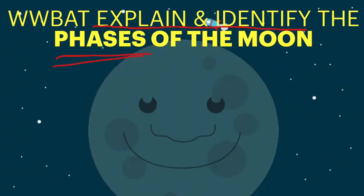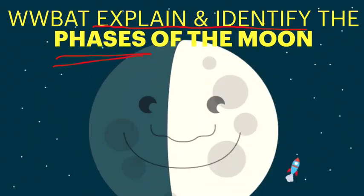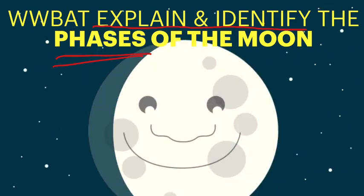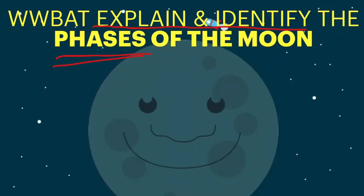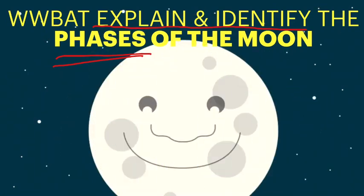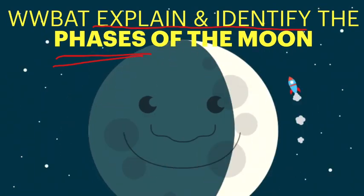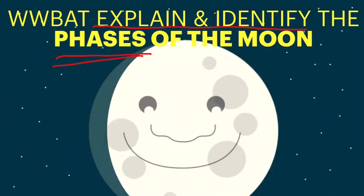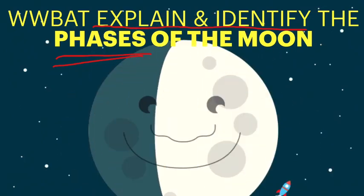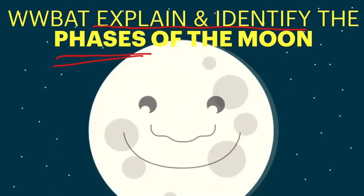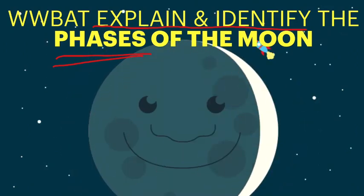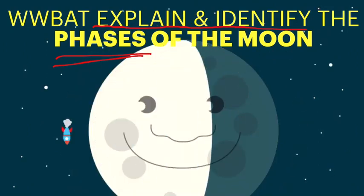What is the meaning of phases? Phases means the different shapes of the moon. If you look in the night sky, you will see that the moon changes shape every night. This is called the phases of the moon. Today you are going to learn about the phases of the moon and identify the different phases.